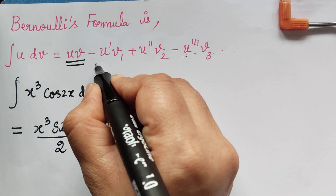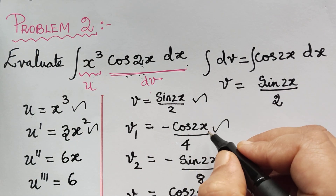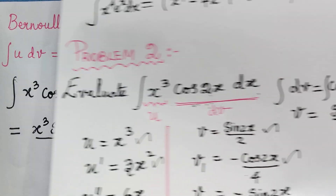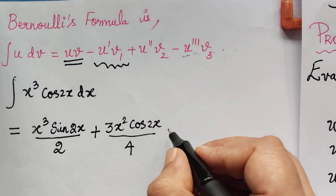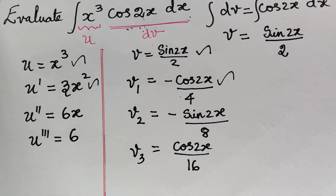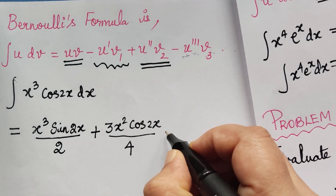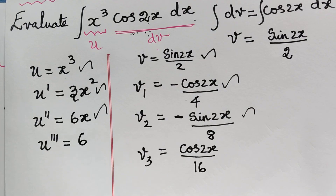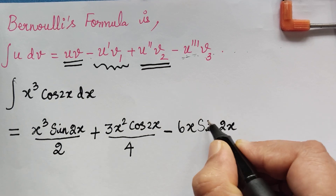Then we have minus u dash times v1. u dash is 3x square and v1 is minus cos 2x divided by 4. The minus and minus make plus, giving 3x square cos 2x divided by 4. Next, plus u double dash times v2. u double dash is 6x and v2 is minus sine 2x divided by 8. Plus times minus gives minus, so we subtract 6x sine 2x divided by 8.